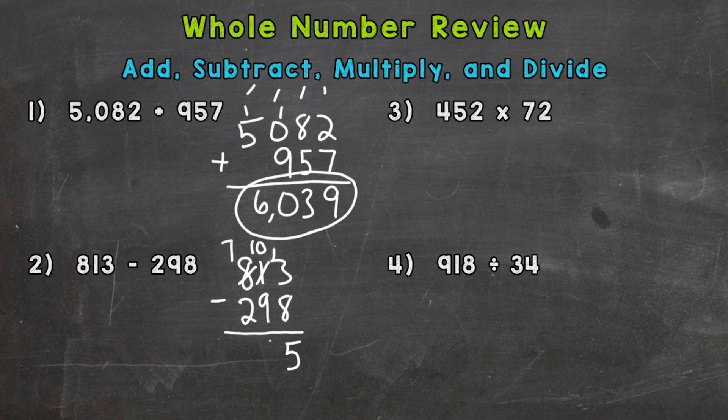10 minus 9 is 1. And 7 minus 2 wraps the problem up and gives us 5. So our difference — the solution to that subtraction problem — is 515.